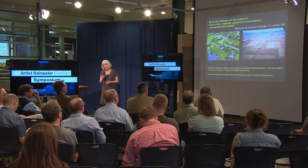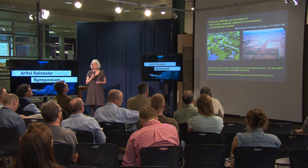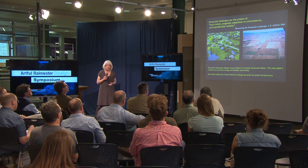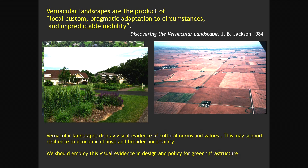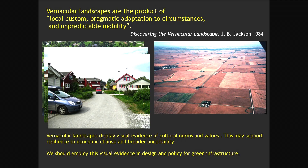J.B. Jackson, the great master of understanding vernacular landscapes, described that vernacular landscapes are the product of local custom, pragmatic adaptation to circumstances, and unpredictable mobility — so he understood the potential for innovation and change. Here are two examples: the exurban lawns running precisely down to the stream, and the massive monoculture of the Iowa landscape. Yes, those are vernacular patterns. But so is this — a landscape in Tromsø, Norway — which gives us an idea about how vernacular patterns and home ownership could adapt, be recognizable, and still change.